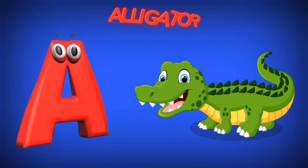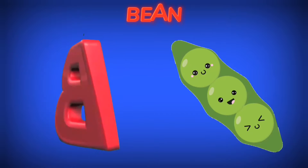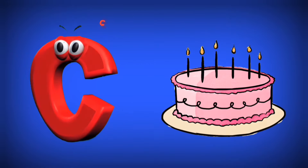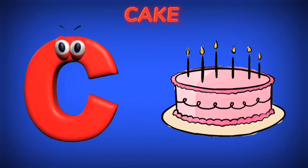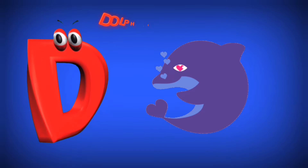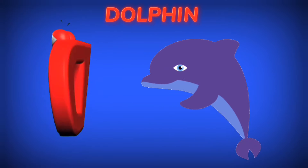A is for Alligator. A, A. B is for Bean. B, B. C is for Cake. C, C. D is for Dolphin. D, D.